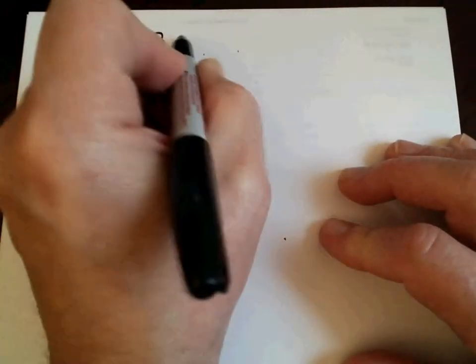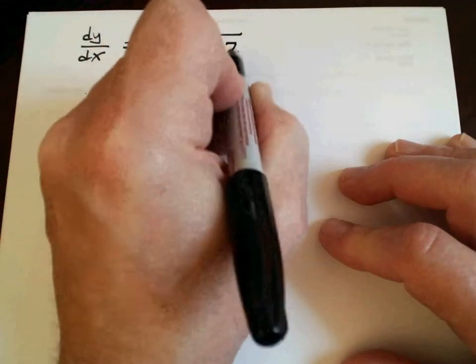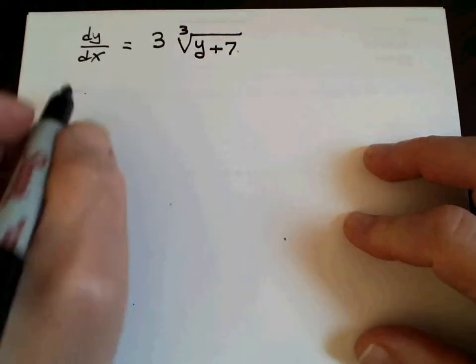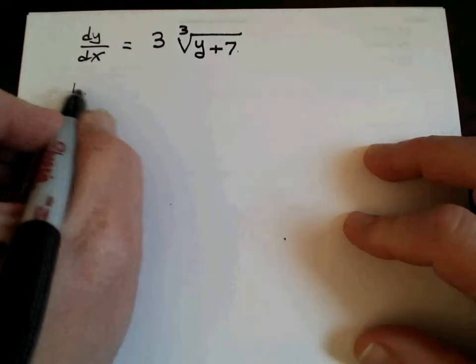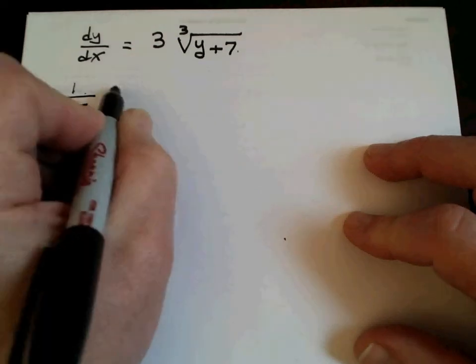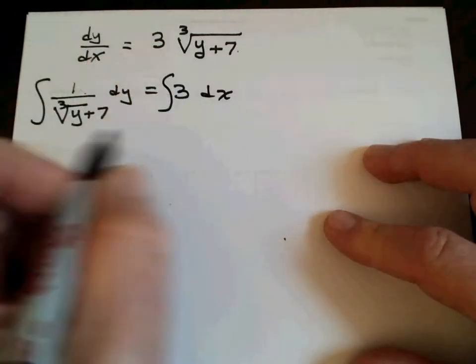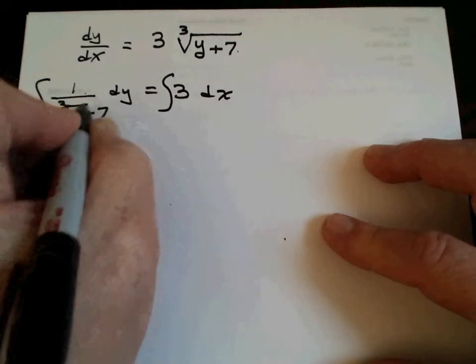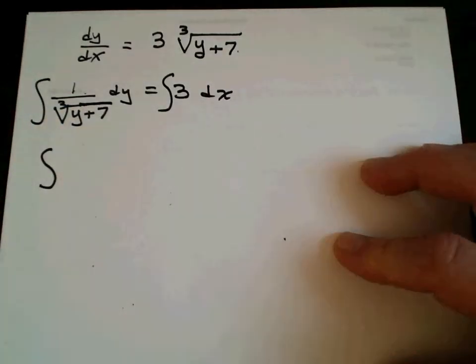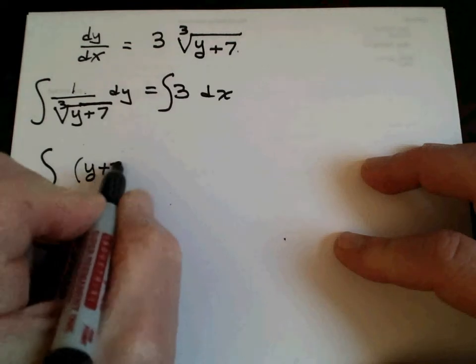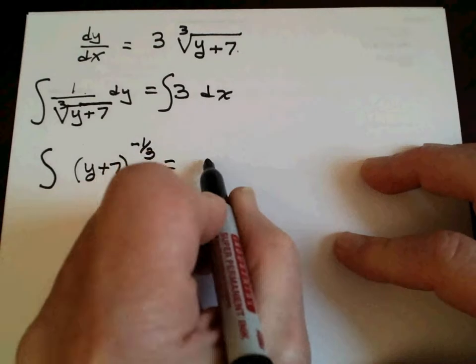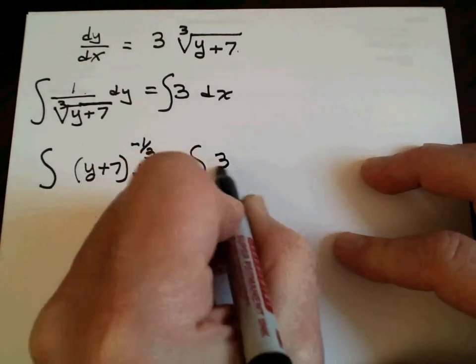dy/dx. My advice: if you're going to redo these, stop the video, try it on your own, and see what happens. The worst thing is you have something wrong. So: dy/dx equals 3 times the cube root of y plus 7. If that's the case, can I say 1 over cube root of (y+7) dy equals 3 dx? Integral on both sides. We're going to rewrite before we do anything, so: (y plus 7) to the negative 1/3 power dy equals 3 dx.